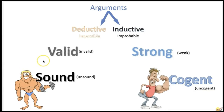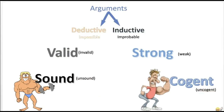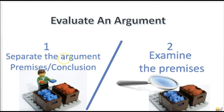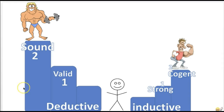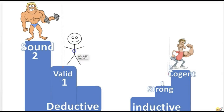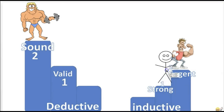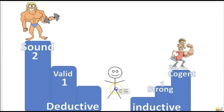Now, how do you get a good deductive argument and a good inductive argument? You already know how to evaluate and grade an argument: first, you separate the premise and the conclusion; second, you examine the premises. You ask two questions: do they support the conclusion, and are they true? You want the strongest argument — the sound argument for deductive, or the cogent argument for inductive. To get there, for deductive you go valid then sound; for inductive, strong then cogent. These are steps up the ladder to the best arguments.